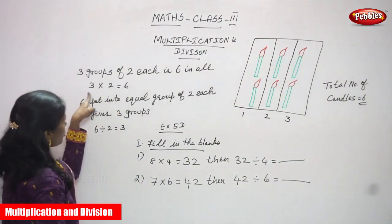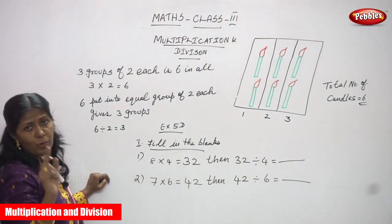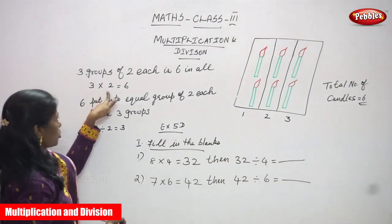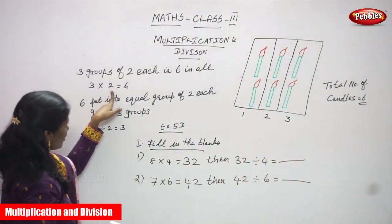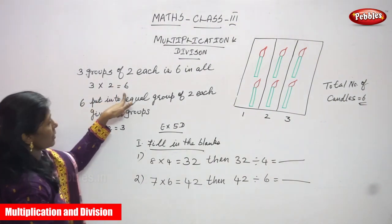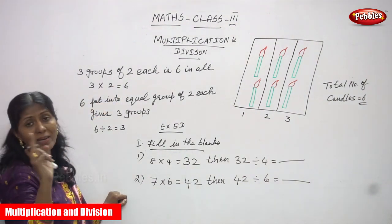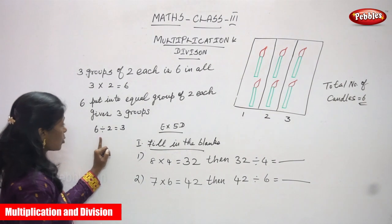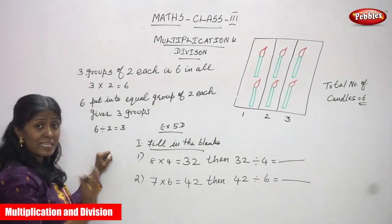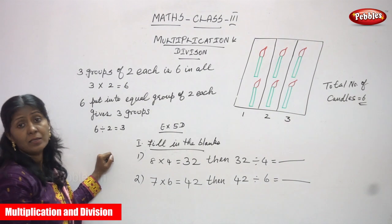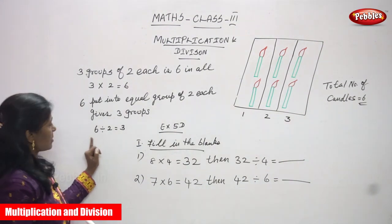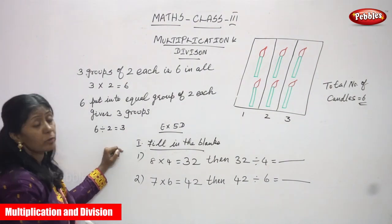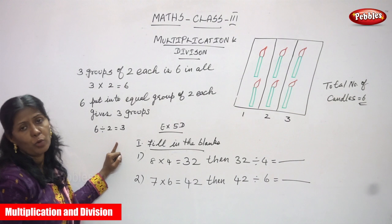For multiplication: one group has two candles, number of groups is three, so three into two — each group has two candles, number of groups is three, three into two gives total six candles. One value is given and you find the other — that is multiplication. Here, total number of candles is given as six. We divide into groups of two each to find how many groups — that is six divided by two gives three groups.